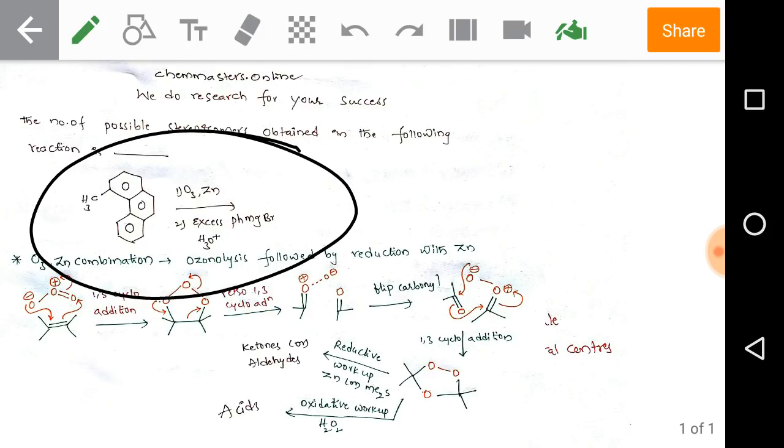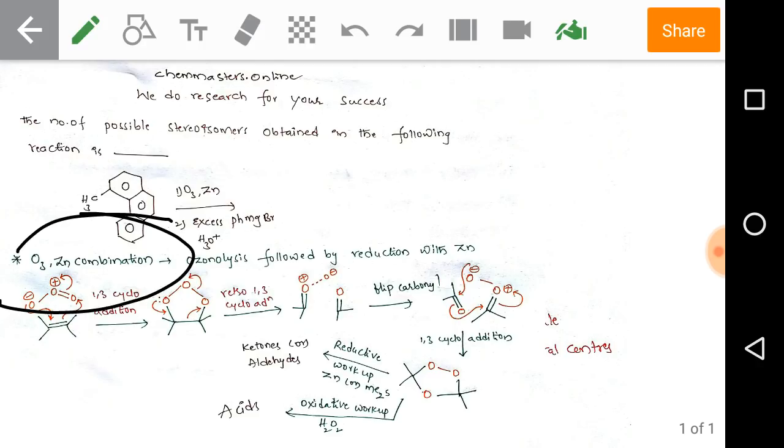Followed by acidic process, that is simply H3O+. First thing: ozone, zinc combination is simply ozonolysis followed by reduction with zinc. Now, how does ozonolysis take place? We are going to discuss the mechanism of ozonolysis here.